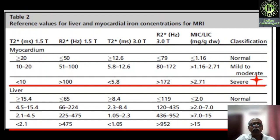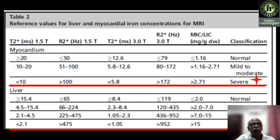The reference values are as follows. For myocardium: T2-star more than 20 milliseconds and R2-star less than 50 Hz is normal. For liver at 1.5T: T2-star of 4.5 to 15.5 milliseconds is mild iron overload; T2-star of 2.1 to 4.5 milliseconds is moderate; T2-star less than 2.1 milliseconds is severe hepatic iron overload. The LIC and MIC can also be given. The liver iron concentration algorithm is downloaded as described, and results are categorized as mild, moderate, or severe.